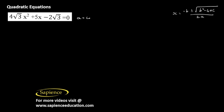For the given question, a is equal to 4 root 3, b is equal to 5, and c is equal to minus 2 root 3. Now using these values, let us find the value of x. So minus b will be minus 5.